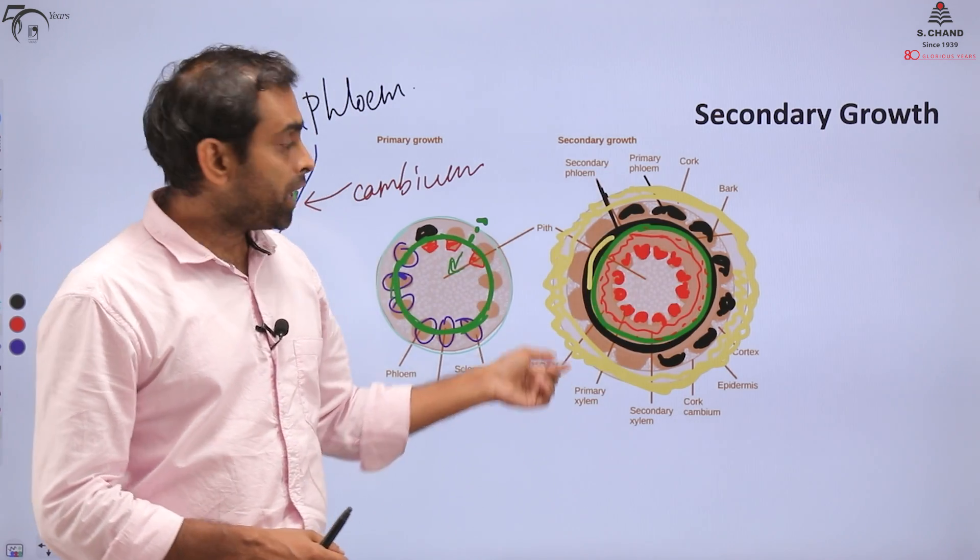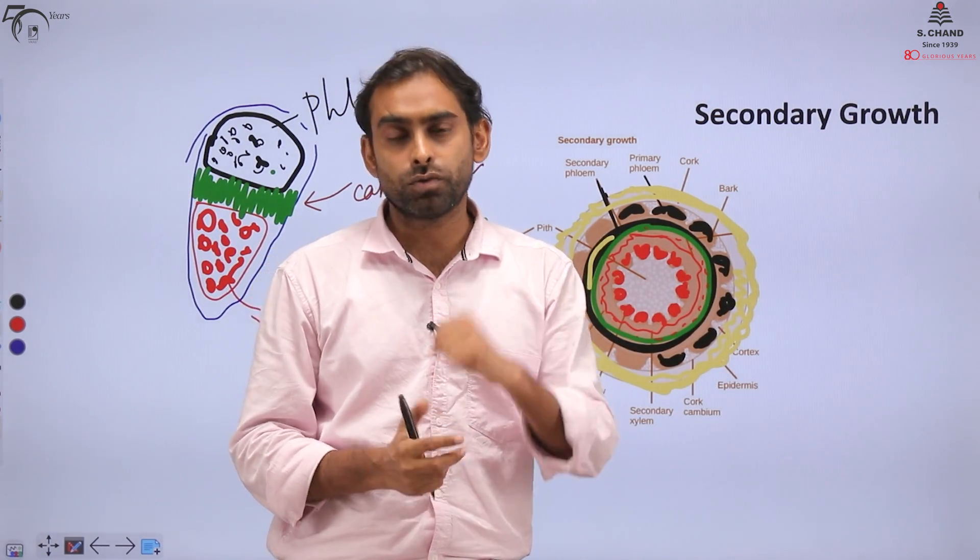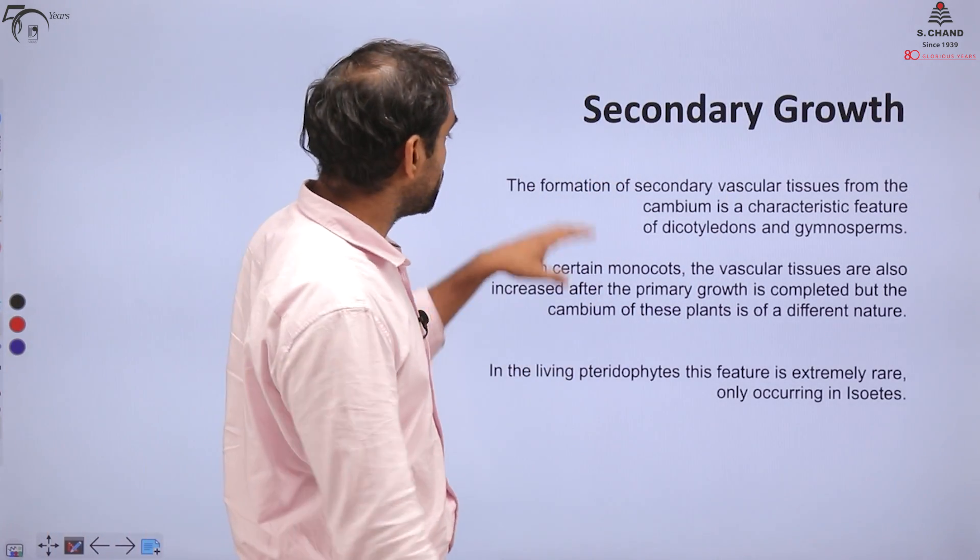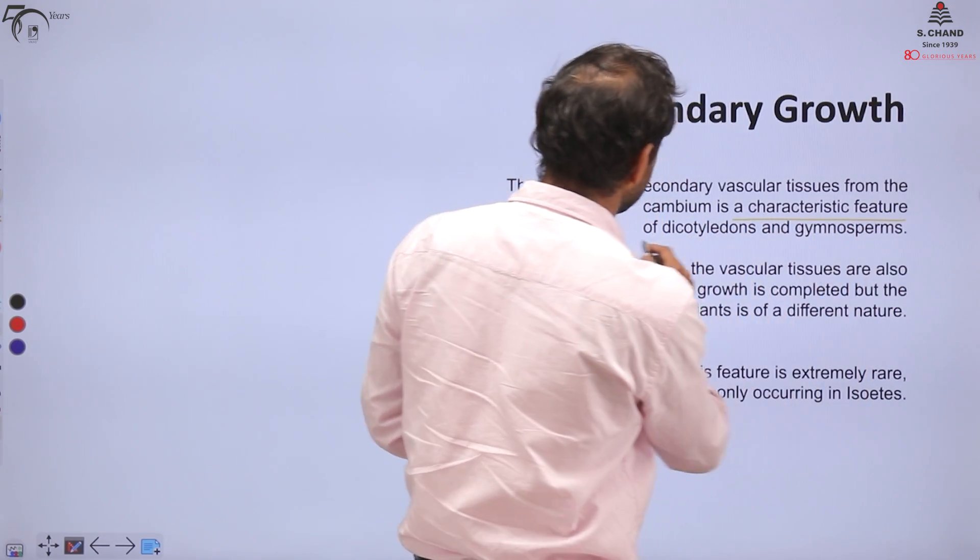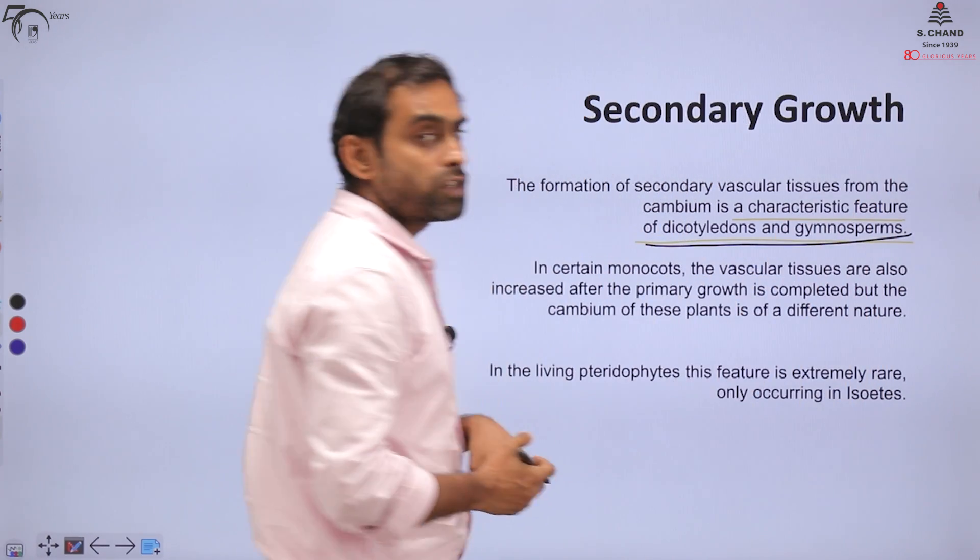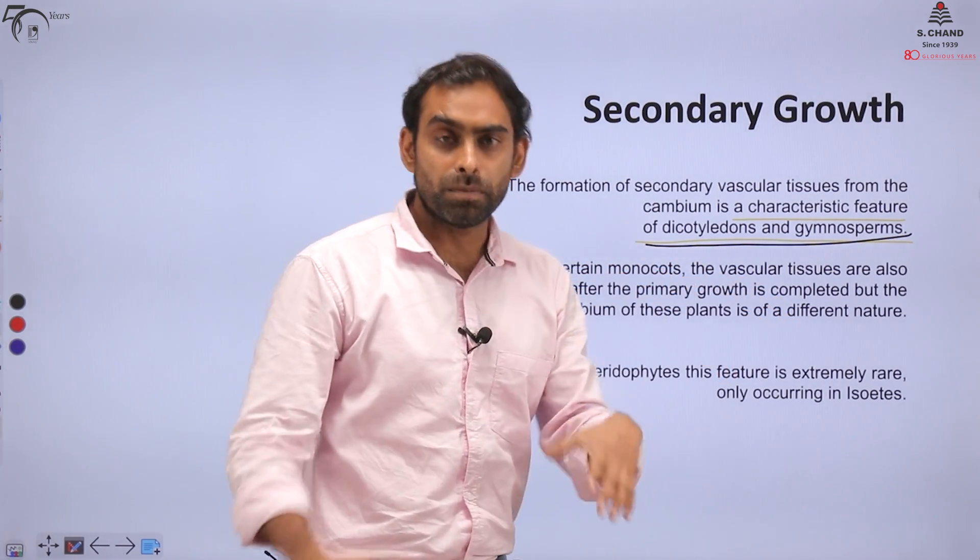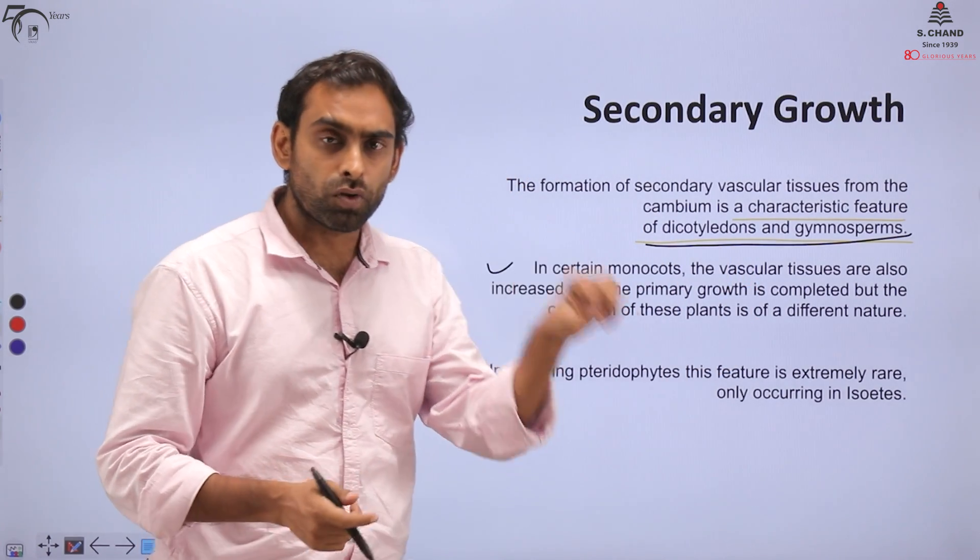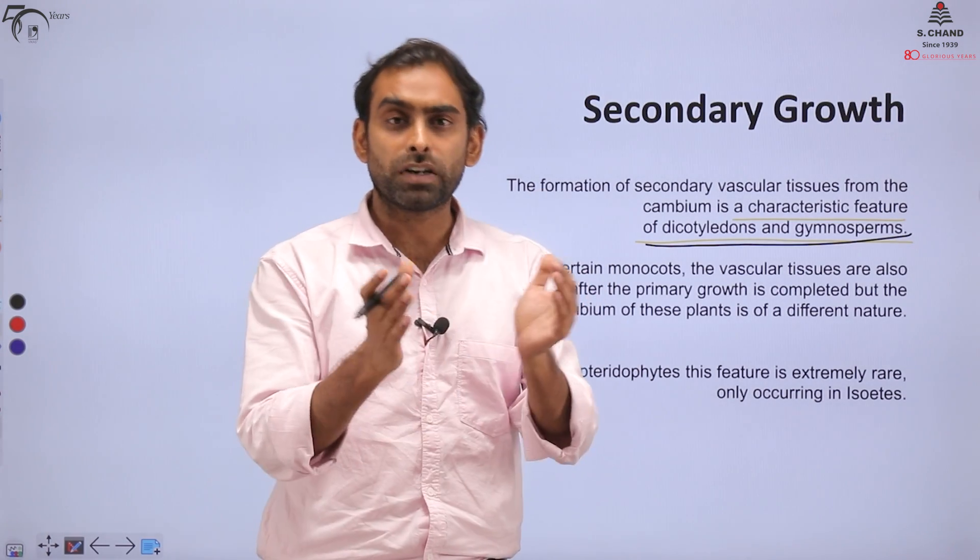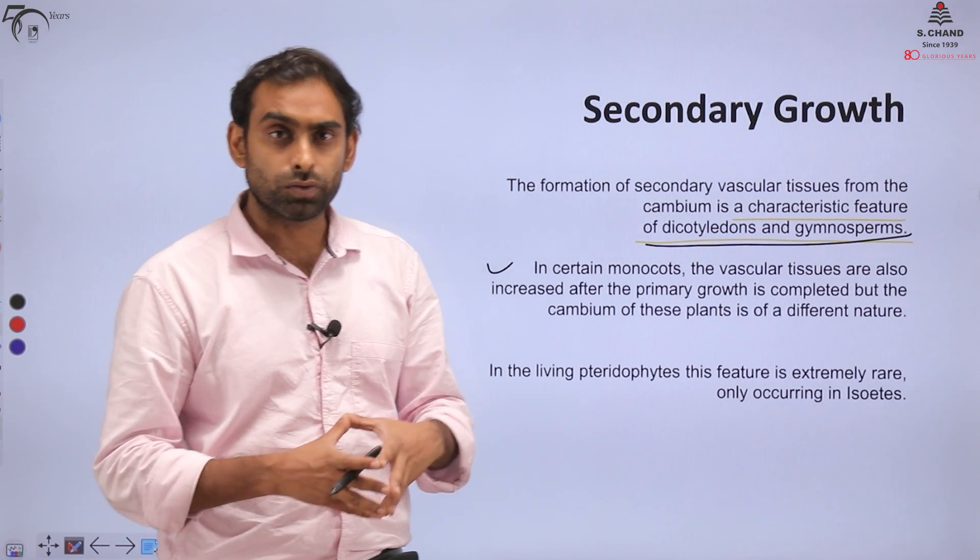Those cells which move inward differentiate into xylem, and those cells which move outward differentiate into phloem, resulting in the formation of secondary xylem and secondary phloem. This entire thing will give rise to a ring. There will be subsequently many rings generated over the period of years, as every year and every season the plant will grow. In certain monocots, vascular tissues increase after primary growth. But many of them might have a reason for secondary growth due to increased parenchymatous tissue. Parenchyma tissue sometimes grows, its cells divide, that can also lead to development of secondary growth in plants.